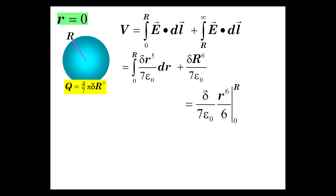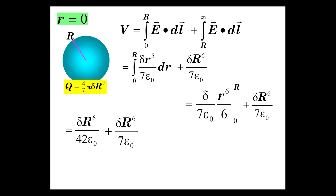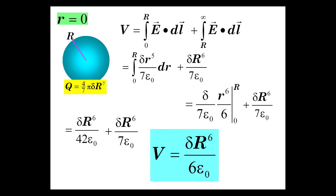The first part gives δ/(7ε₀) · R⁶/6. Adding the other piece, we get δR⁶/(42ε₀) + δR⁶/(7ε₀), which combines to give δR⁶/(6ε₀).